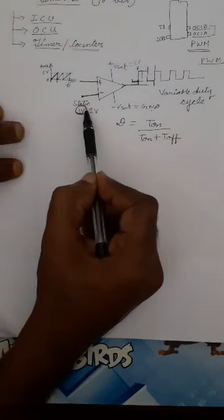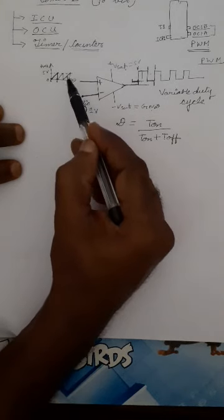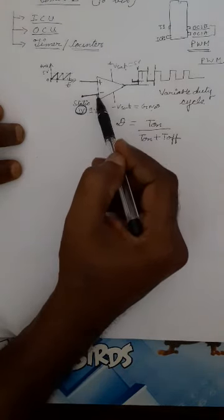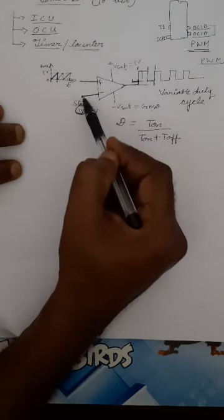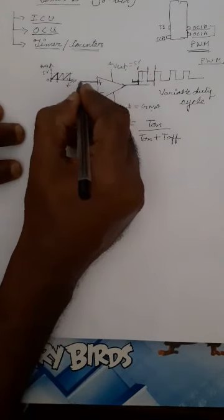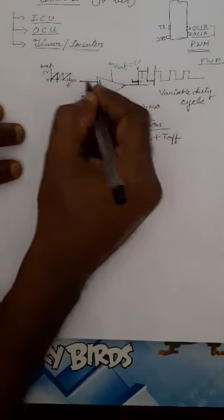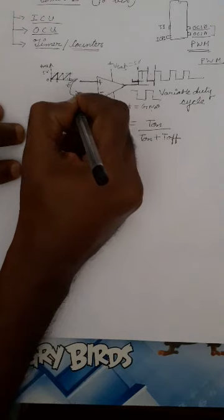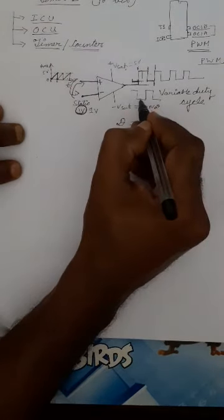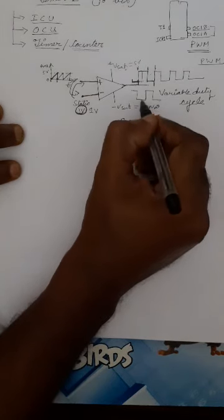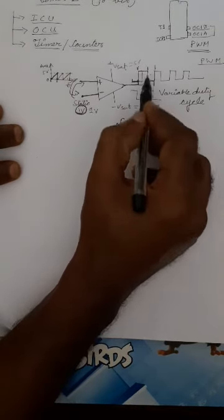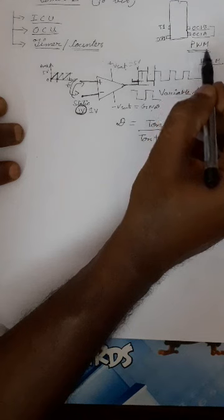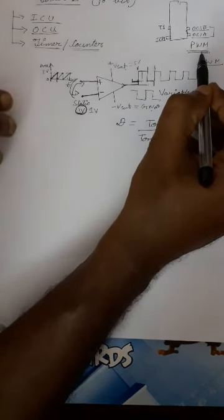You can also swap the inputs — give the sawtooth to the inverting terminal and the constant value to the non-inverting terminal. The result is simply an inverted output waveform. So you have two options: an inverted output or a non-inverted output. These are the general phenomena for generating pulse width modulation with a variable pulse width.